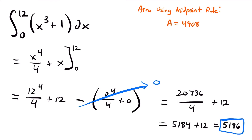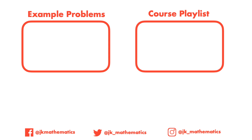You can see how that compares to the approximation of 4908 found using the midpoint rule. It's a little further apart than before, but that's because this is a much larger area — around 5,000 compared to about 341 before. It's pretty close considering the scale. Using a right or left Riemann sum would be much further off. The takeaway is that the midpoint rule is a pretty good approximation for the area under a curve. Check out our examples video linked at the end for more practice. If you have any questions, leave them in the comments.